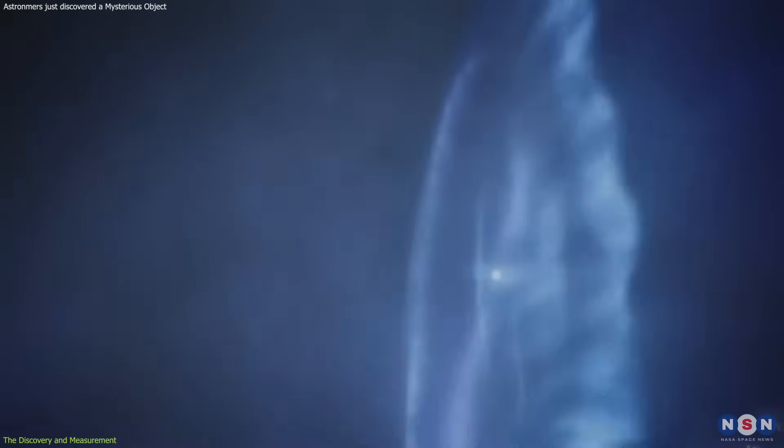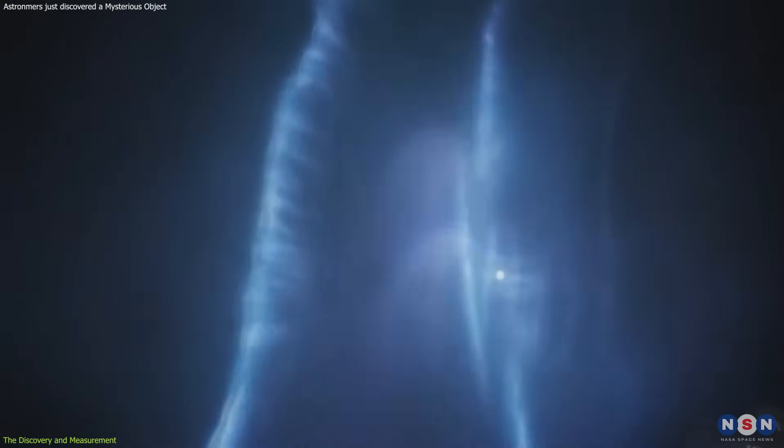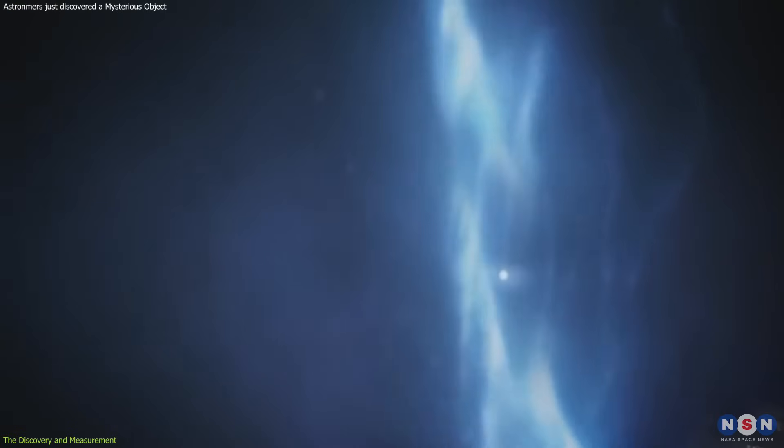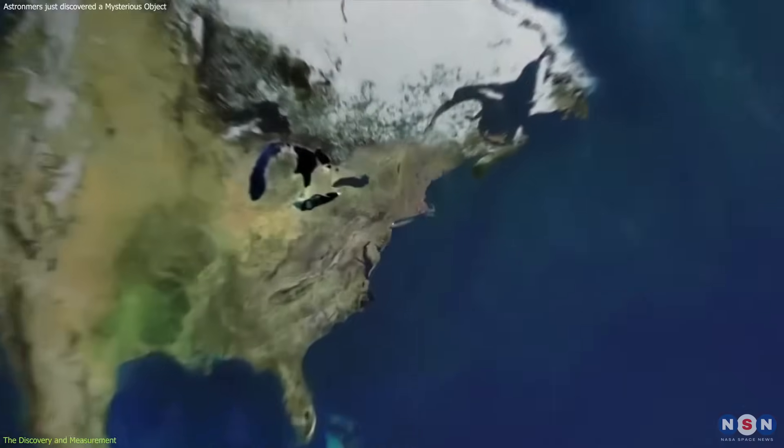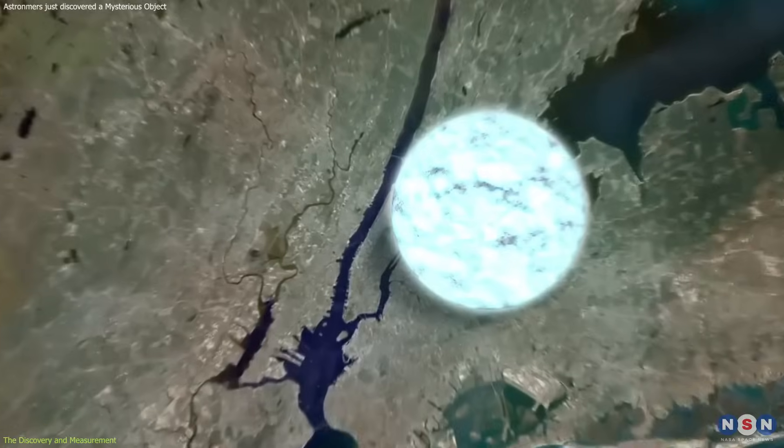A pulsar is a rapidly spinning neutron star that emits regular pulses of radio waves, like a cosmic lighthouse. It is the collapsed core of a massive star that exploded in a supernova. A neutron star is very dense, about the size of a city, but with the mass of the sun.